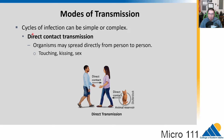Direct transmission involves touching — direct contact. Organisms may spread directly from person to person through touching, kissing, or sex. We're actually seeing right now an outbreak of monkeypox, which is caused by direct contact, generally through sexual contact.